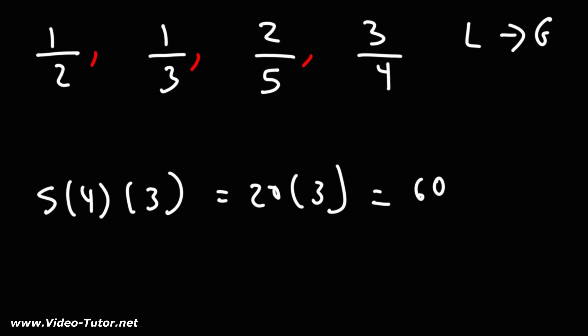3 times 4 times 5 equals 60. You could divide 60 by any of these numbers. So now let's get common denominators.